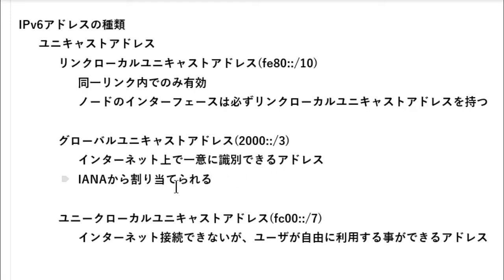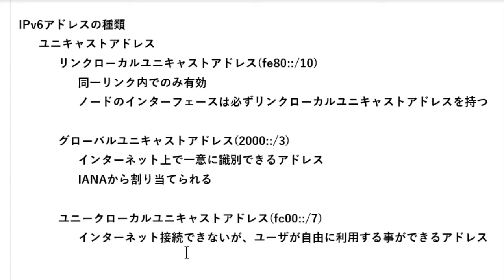グローバルユニキャストアドレスはIANAから割り当てられます。2から始まっているものを見たらグローバルユニキャストアドレスだなという感じで識別できます。次がユニークローカルユニキャストアドレス。これはFC00::/7で表現されているアドレスで、インターネットには接続できませんが、ユーザーがIPv6アドレスを自由に使うために利用することができます。